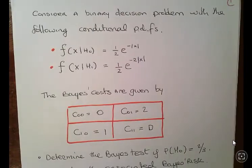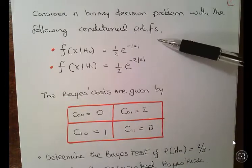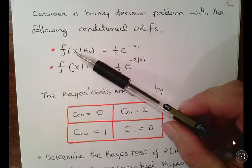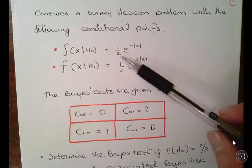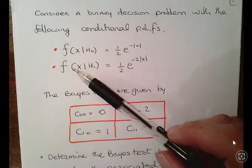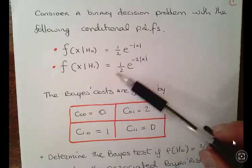So let's actually get into a real example here. Consider a binary decision problem with the following conditional PDFs. This is the type of thing you'll expect to start off with: the conditional PDF of x given H0 equals a half times e to the minus absolute value of x.